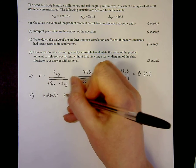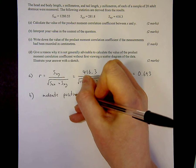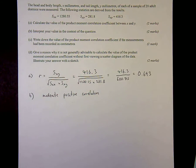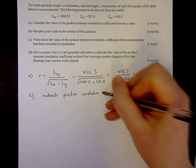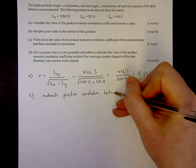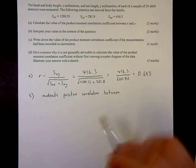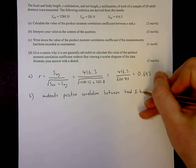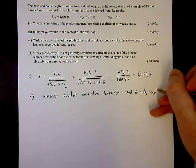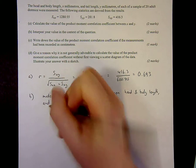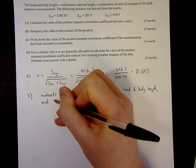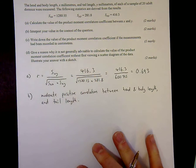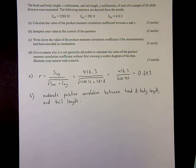Moderate positive correlation. That will get me one mark. To get the second mark, I want to say what is it between, in the context of the question, where it's about head and body length and tail length. And that's what gets you the second mark, that putting it into context bit.